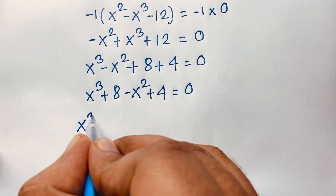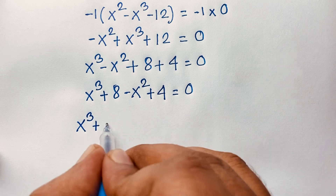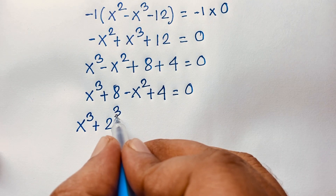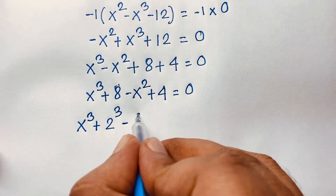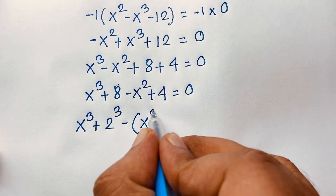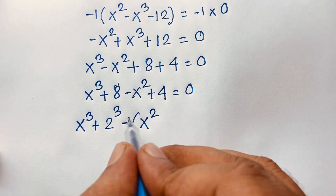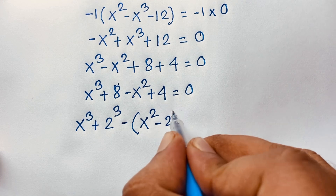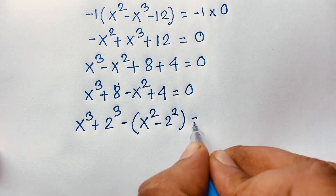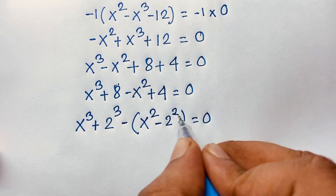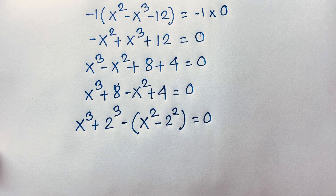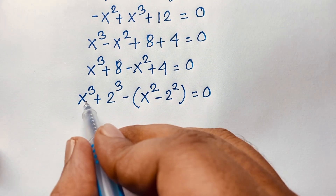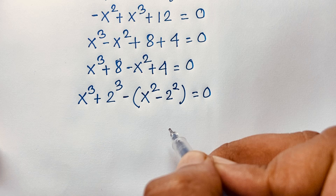Now, x to the power 3 plus 8: this 8 is 2 to the power 3, since 2 times 2 times 2 is 8. And here minus is common, so it will be x squared, and this 4 is 2 to the power 2, since 2 squared is 4. So here we have a cube plus b cube, and this is a squared minus b squared.